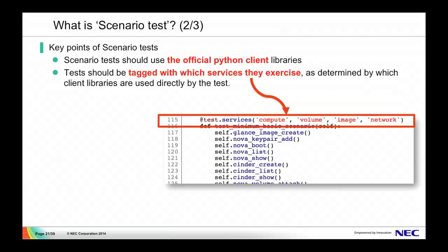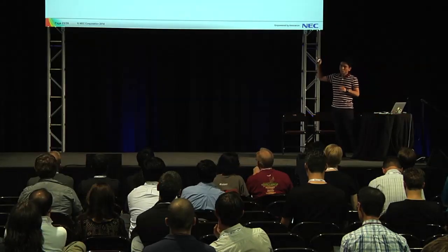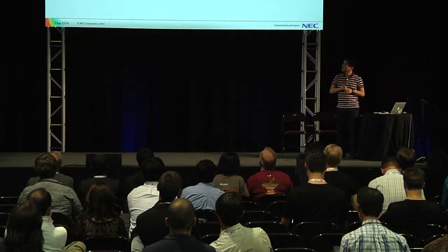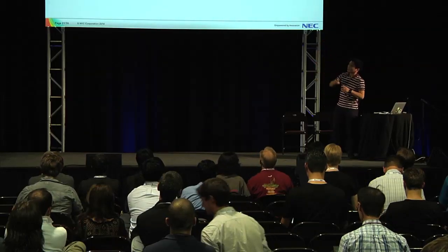Scenario tests should use the official Python client libraries, and the test should be tagged with the services they exercise. For example, if the volume service is not available per the Tempest config, this test will be skipped because the volume service is not present.